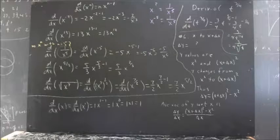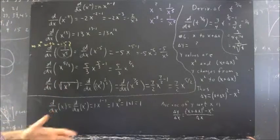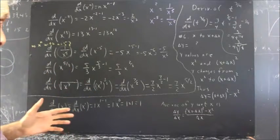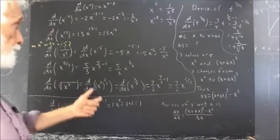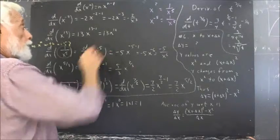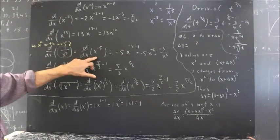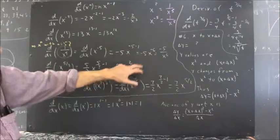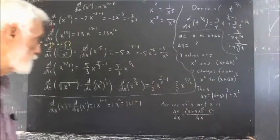1 over x to the 5th is x to the negative 5. Unfortunately, people have more trouble with that than they should, since we've been over the review on laws of exponents. Your test isn't until next week, so you've got plenty of time. Now we can apply the law, just as we applied it to x to the negative 2. We get negative 5x to the negative 5 minus 1, which is negative 5x to the negative 6th, which can be written as negative 5 over x to the 6th.